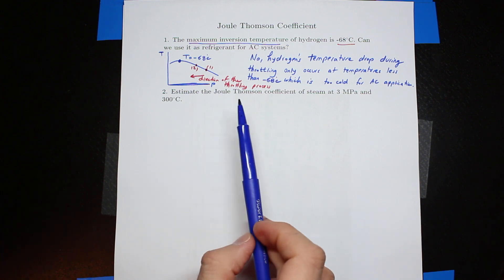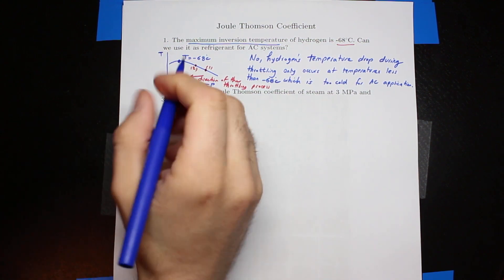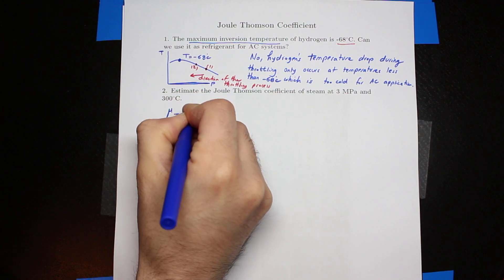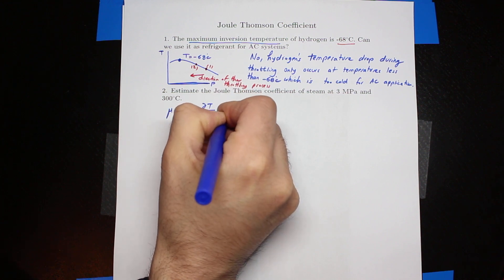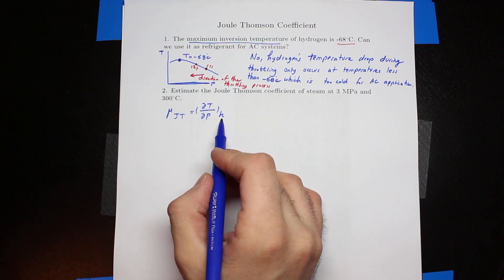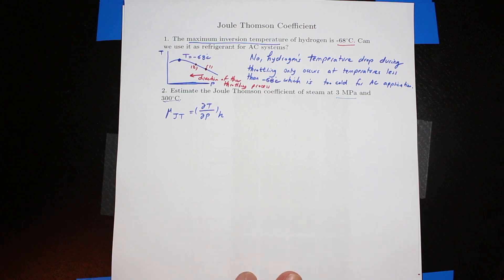Now let's do the second problem. The question asks for the Joule-Thompson coefficient of steam at 3 megapascal and 300 degrees C. To solve this, we apply the equation: mu Joule-Thompson equals the partial derivative of T with respect to P at constant enthalpy.